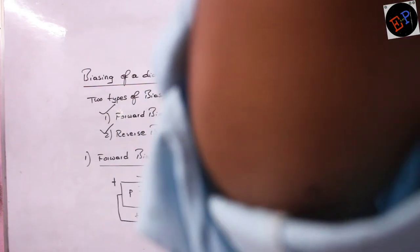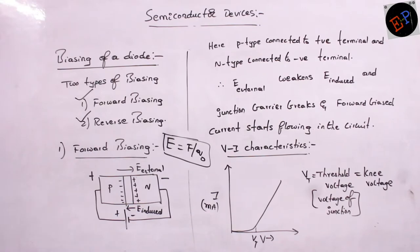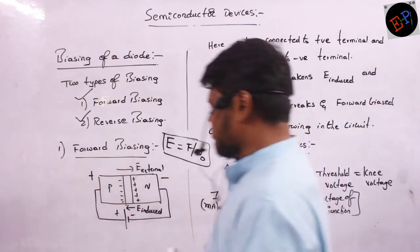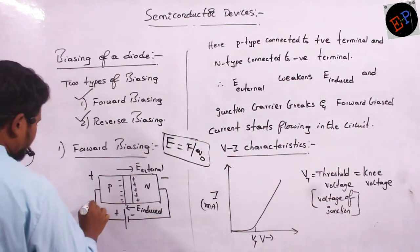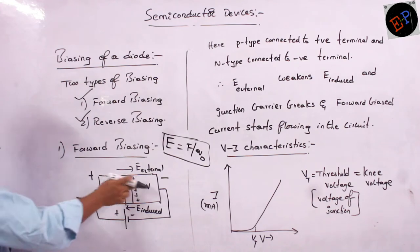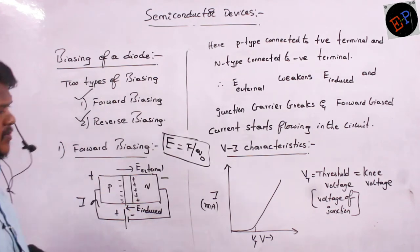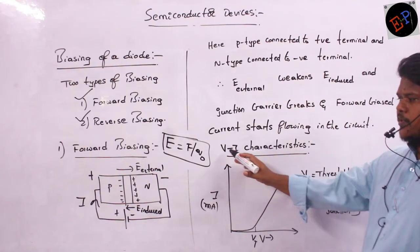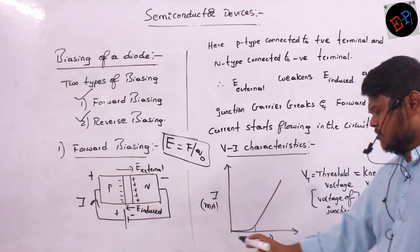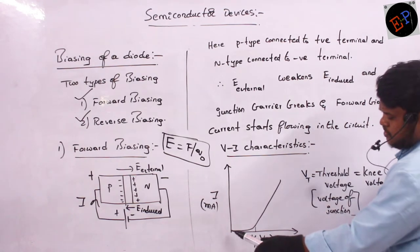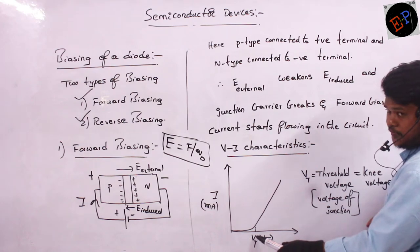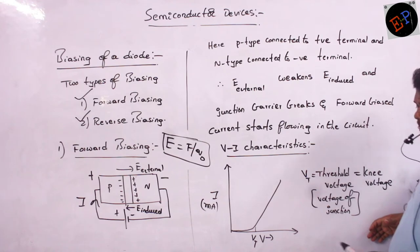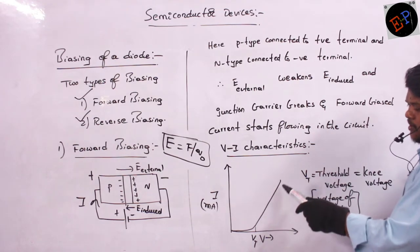When the junction barrier breaks down, current starts flowing from P to N — that is the direction of current. If I draw the VI characteristics — how current varies with respect to potential — from 0 to threshold voltage there is no rise in current. But at threshold voltage, suddenly you can see a rise of current.